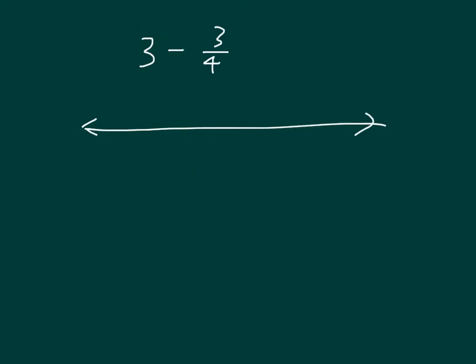I have 3 minus 3 fourths. I'm going to show it this way here, where we have 0, 1, 2, and 3. I already know that I'm starting at 3 now, and I'm actually taking away 3 fourths. Am I taking away more or less than 1? Oh, less than 1. So I know that my answer should be between 2 and 3.